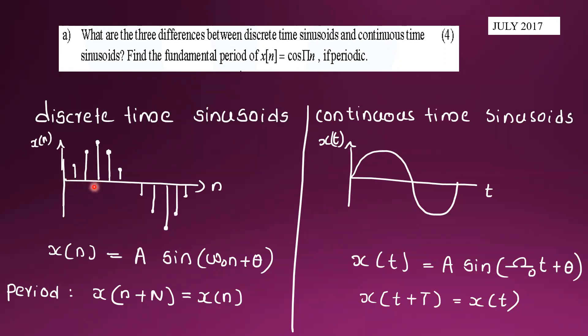First, consider what a continuous-time signal is. A continuous-time signal is defined at every instant of time. Signals that are defined for every instant of time are known as continuous-time signals.